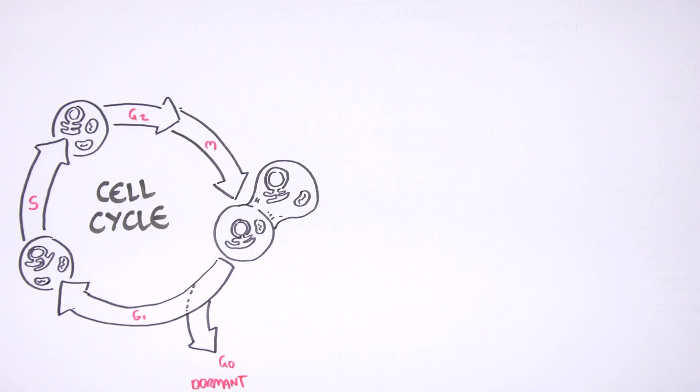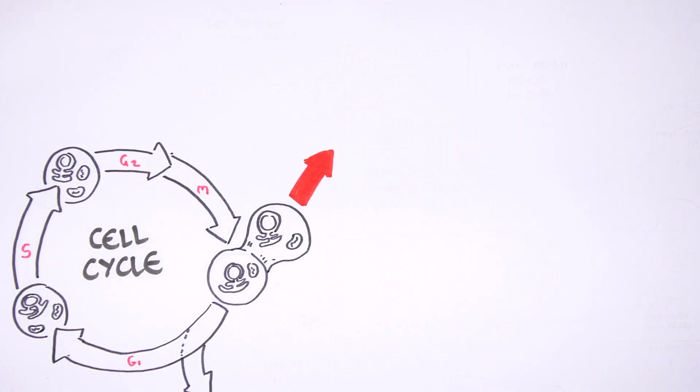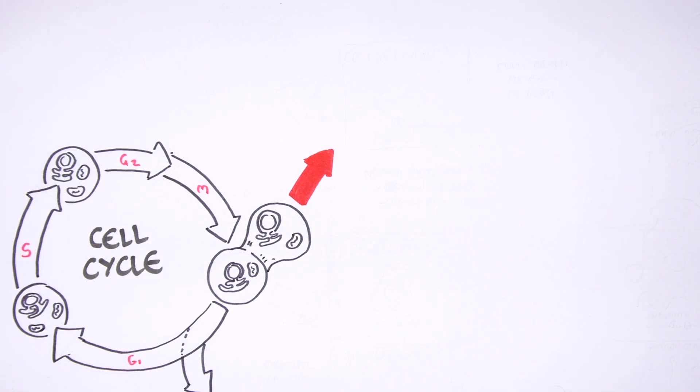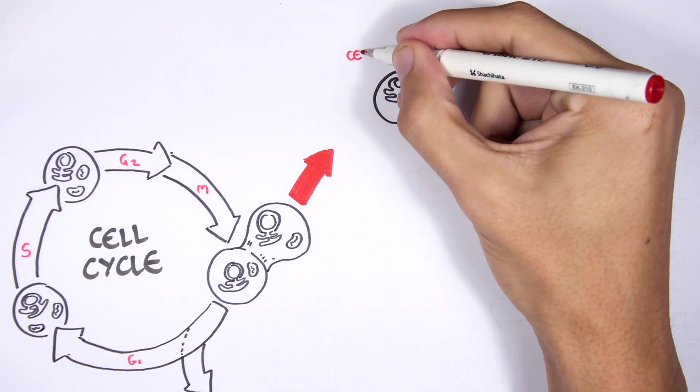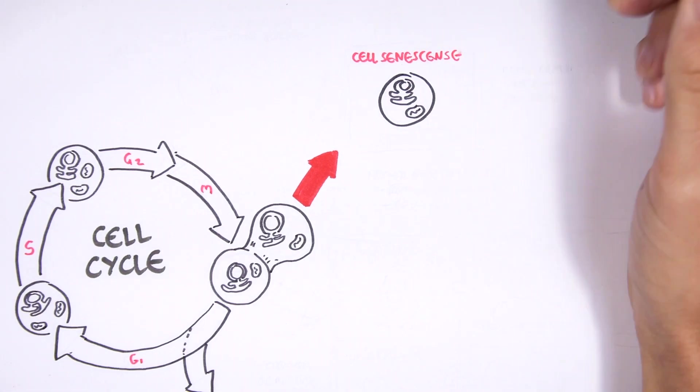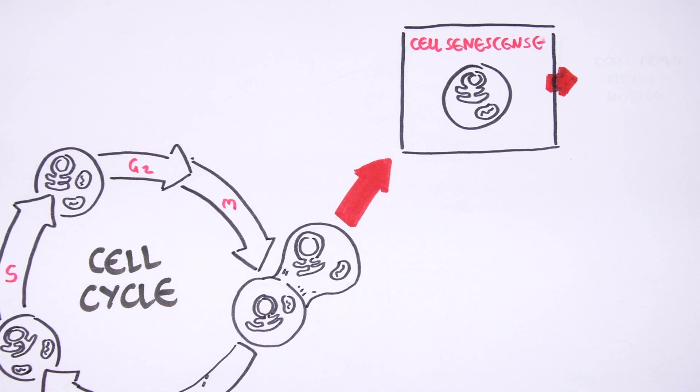Of course, after this mitotic cell has divided many, many times, it will reach a limit to when it cannot divide anymore. And so this cell will become a senescent cell. So cell senescence. And a senescent cell means that the cell cannot replicate anymore because it has reached its limit, known as the Hayflick limit.